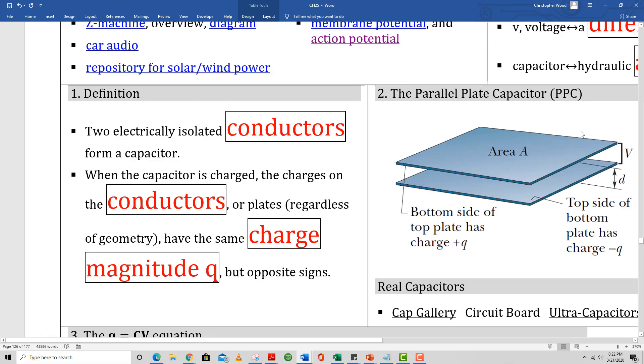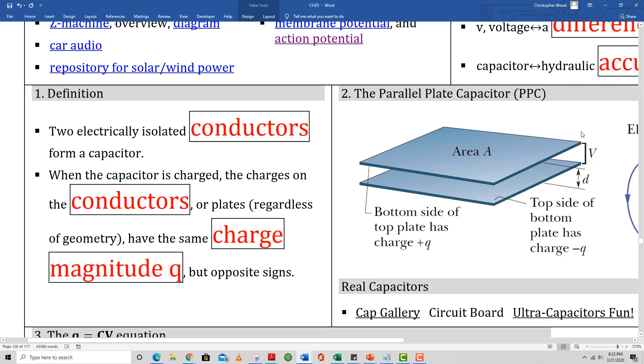Box number one, definition. Two electrically isolated conductors form a capacitor. Look at the picture in box number two. Those are the two conducting plates that are separated. The two physical characteristics that we care about right now are the plate surface area, A, and the separation between the plates, D.